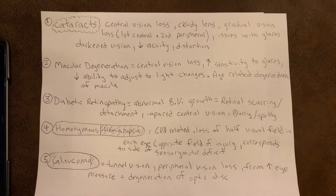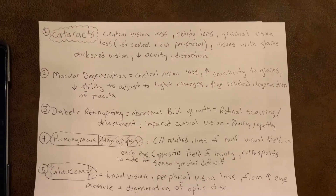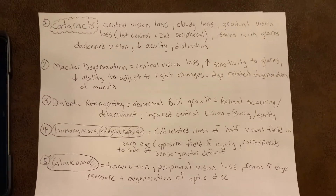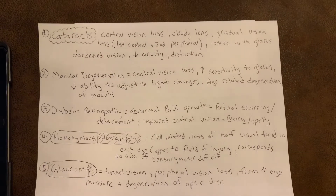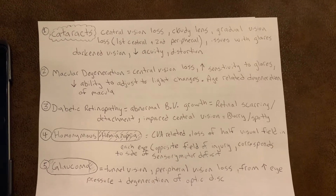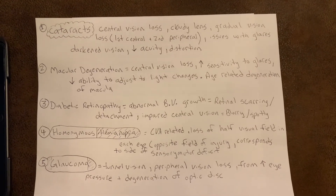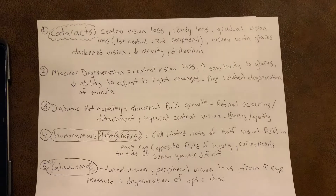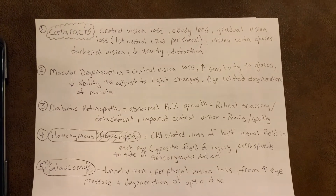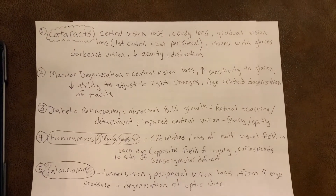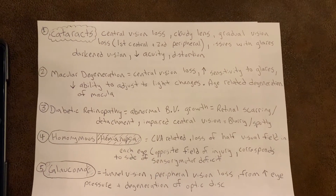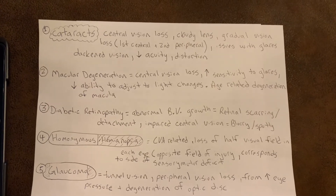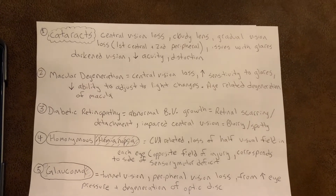The first type of vision loss is cataracts, which involves central vision loss and is due to a cloudy lens. A good mnemonic you can use to memorize that is it starts with a C and so does cloudy — so cataracts has cloudy lenses.